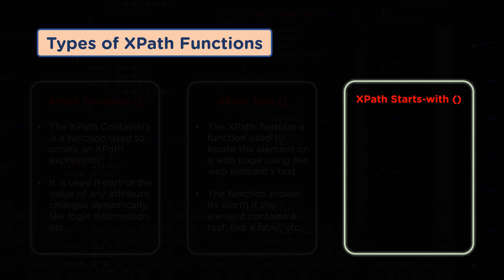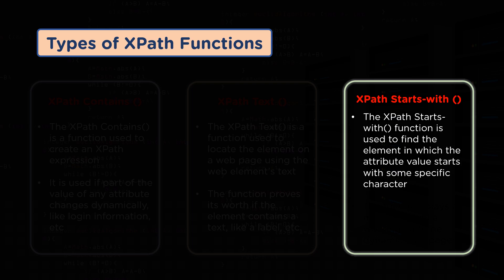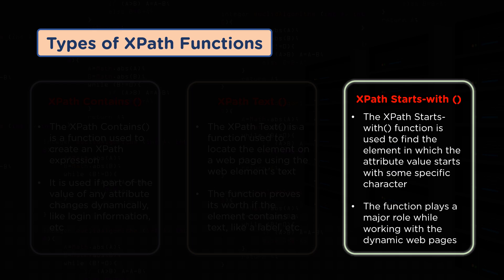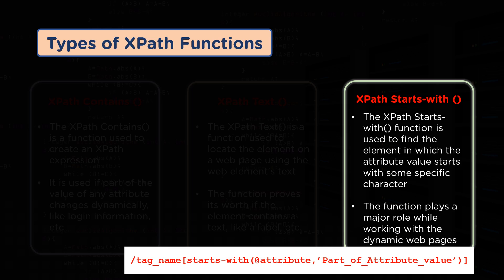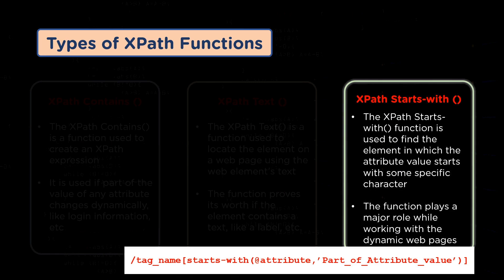The last type of XPath function is the XPath startsWith function, which is used to find elements in which the attribute values start with some specific character or sequence of characters. The function plays a major role while working with dynamic web pages. We can also use this method to find elements whose attribute value is static. The syntax for the startsWith function can be seen on the screen. It accepts two parameters: the attribute of the tag to validate, and the partial attribute value with which the attribute is expected to start.